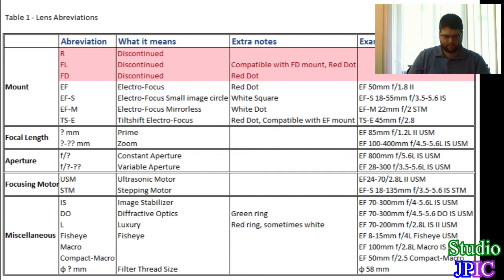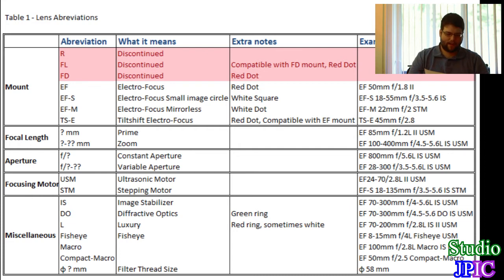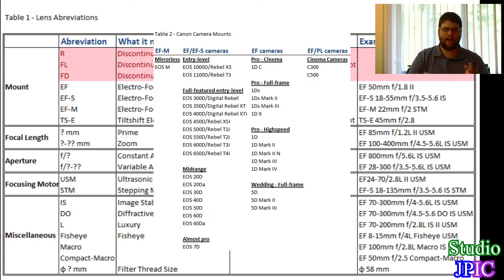The modern mount types are the EF (electro focus) and the EF-S (electro focus small image circle). You can identify them: EF lenses and cameras have a red dot, and EF-S has a white square. The EF mount is on all modern Canon cameras today, while the smaller Rebel cameras also support the EF-S mount. I'll post another video explaining which camera falls into which category.